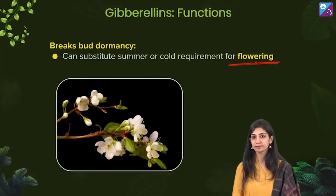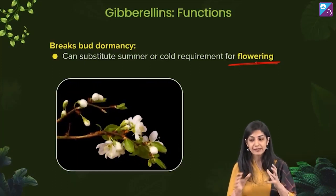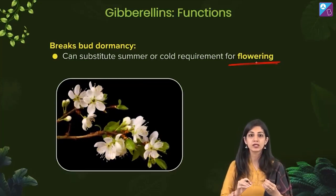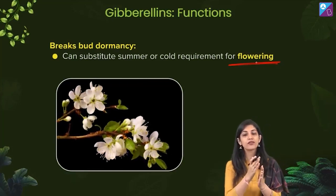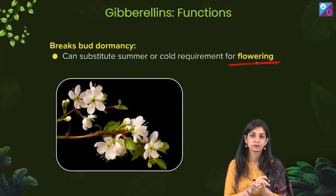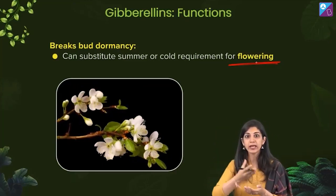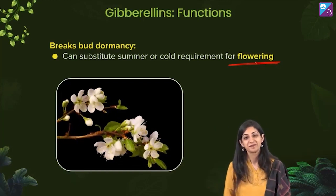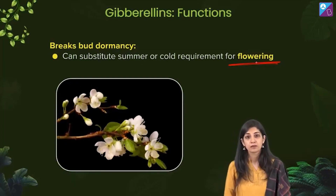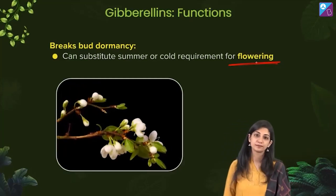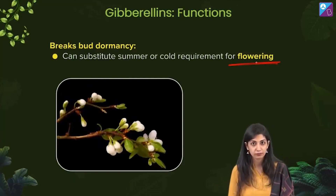Some plants are summer varieties or winter varieties. If a plant is a summer variety, it will give flowers in summer. Gibberellins can actually replace the requirement of long days in summer for such a plant. That is why sometimes you find non-seasonal fruits in the market. They can substitute the summer or cold requirement for flowering.